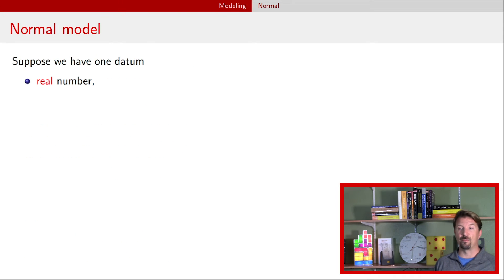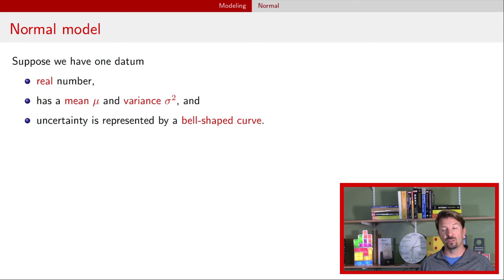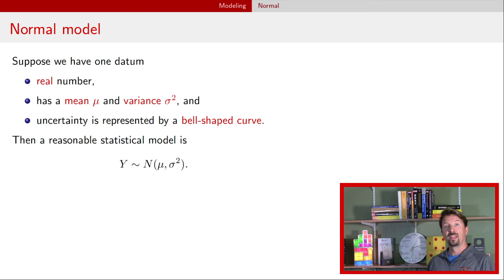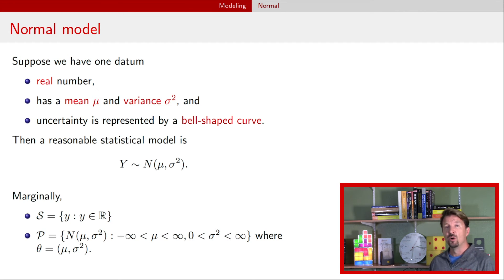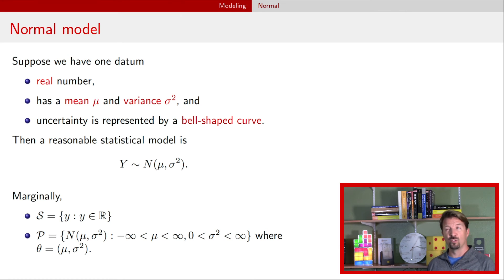In a normal model, we're going to have a real number with a mean mu and a variance sigma squared. The uncertainty about what that value is going to be can be represented by a bell-shaped curve. We can say that y is a random variable with a normal distribution with mean mu and variance sigma squared. The support script S is just all real numbers, and our collection script P is the set of normal distributions with unknown mean mu and unknown variance sigma squared, where mu can be any real number but the variance must be positive. We combine mu and sigma squared into a single vector theta.